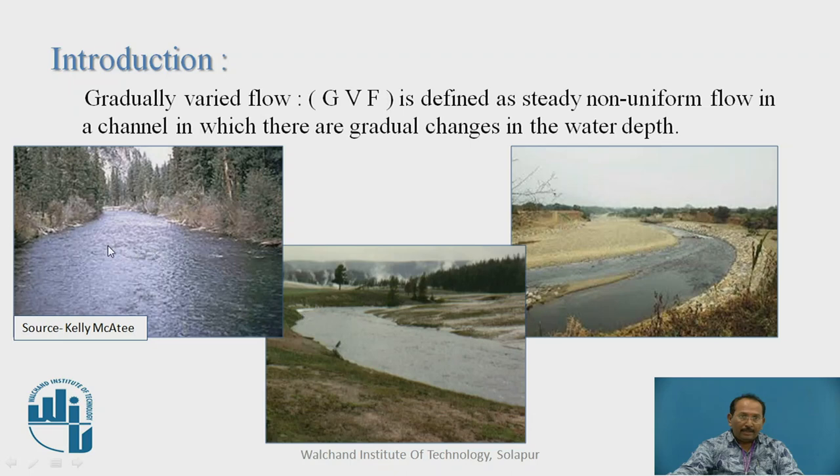Now we can see here, it is a steady and non-uniform flow, particularly here also. These three photographs of the rivers, where we can see it is a GVF, a gradually varied flow. The other is rapidly varied, where we can say abrupt change of different characteristics took place. Here gradual changes are there.